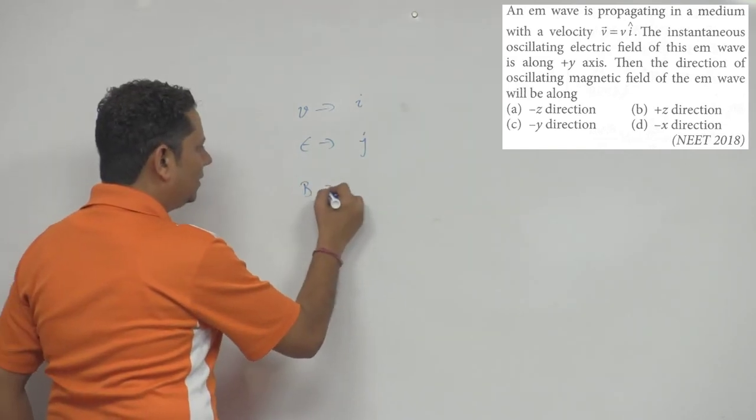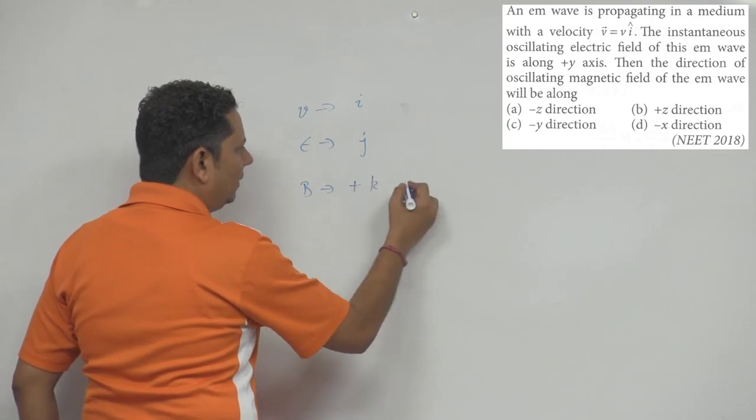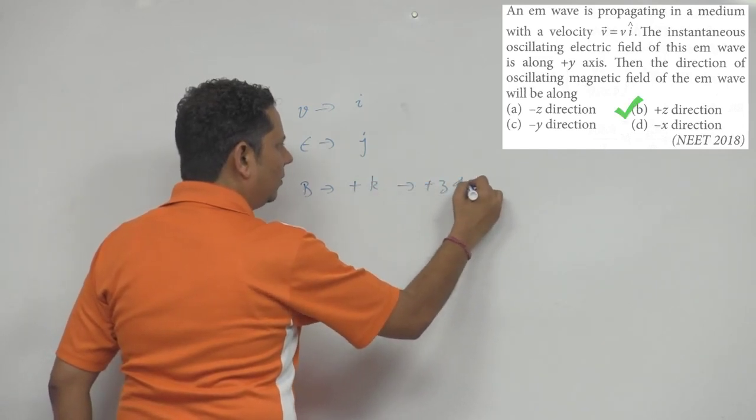Then your magnetic field, the direction of B, will be plus k cap, that is, it will be in plus Z direction.